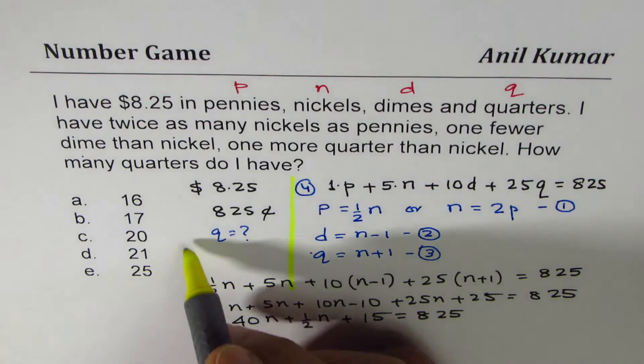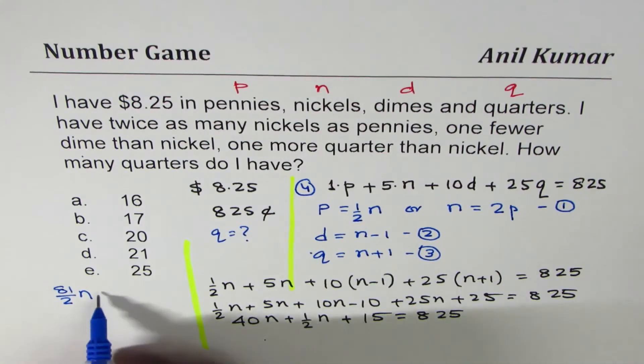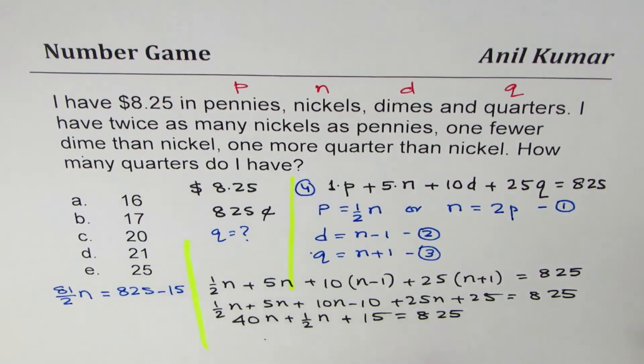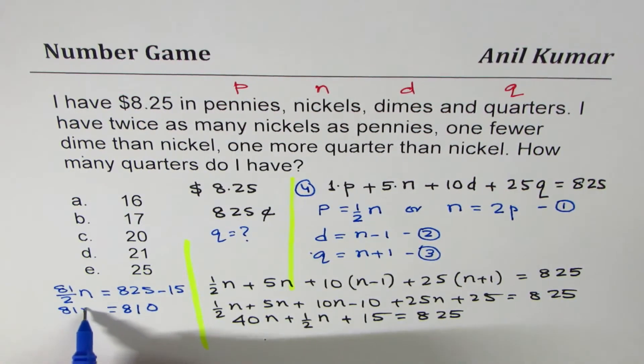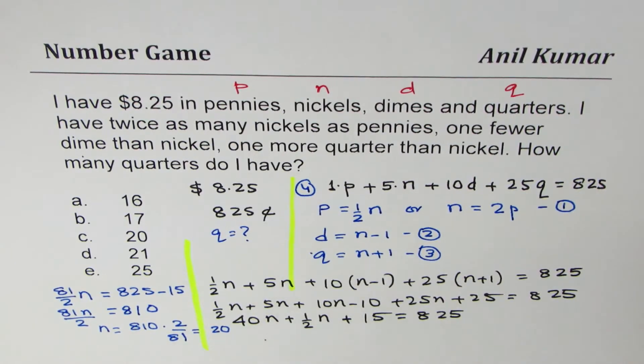If I add these two fractions, I get 4 times 2 is 80, 81 over 2. That is 81 over 2 nickels. I could have written 40.5 also equals to 825 minus 15. That gives us 81N over 2. The number of nickels is 810 times 2 over 81. And this 81 cancels, giving us 10 and so we get 20 nickels. We get 20 nickels when we simplify this equation.